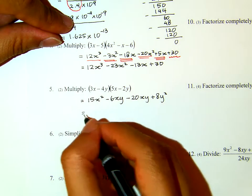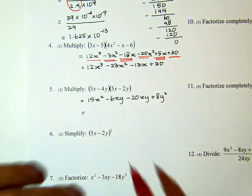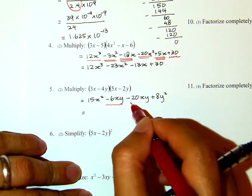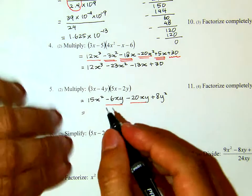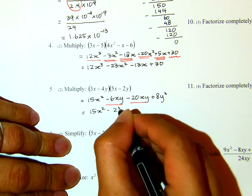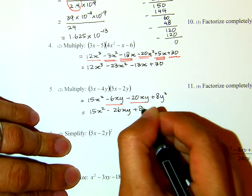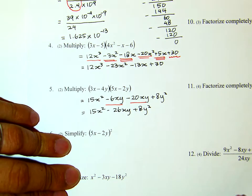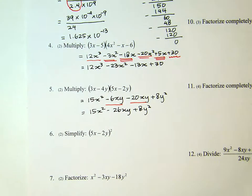Now, from here, I will combine like terms in the middle, as we expect. That will give me 15x squared minus 26xy plus 8y squared. That's for number 5.